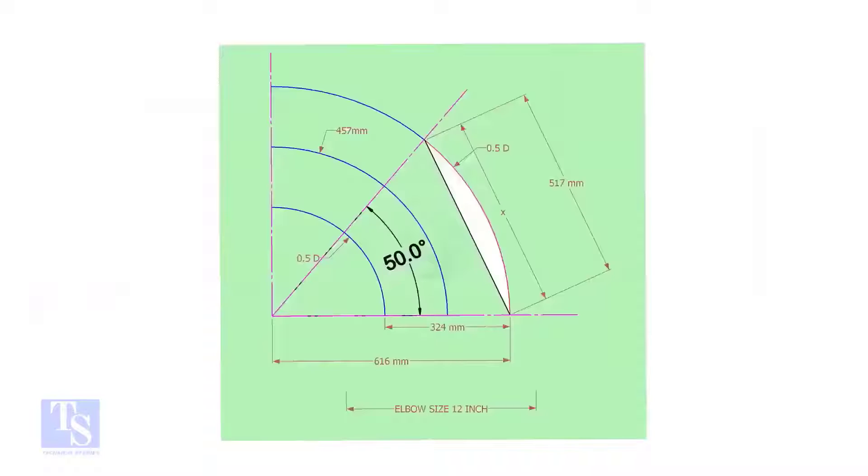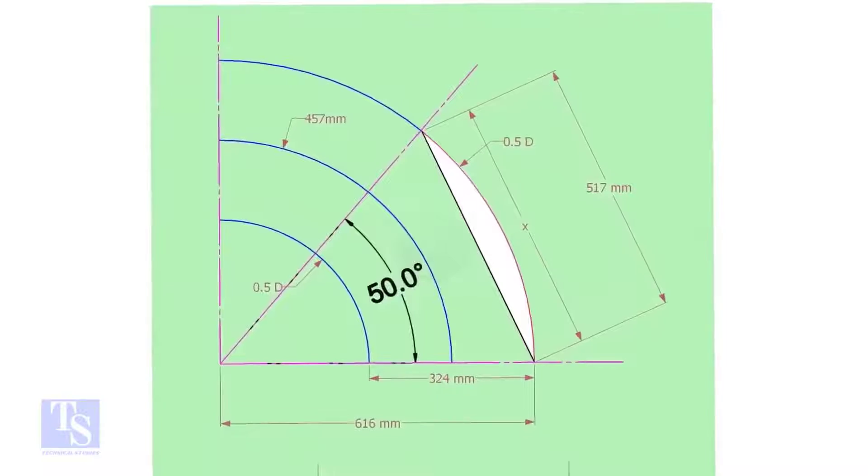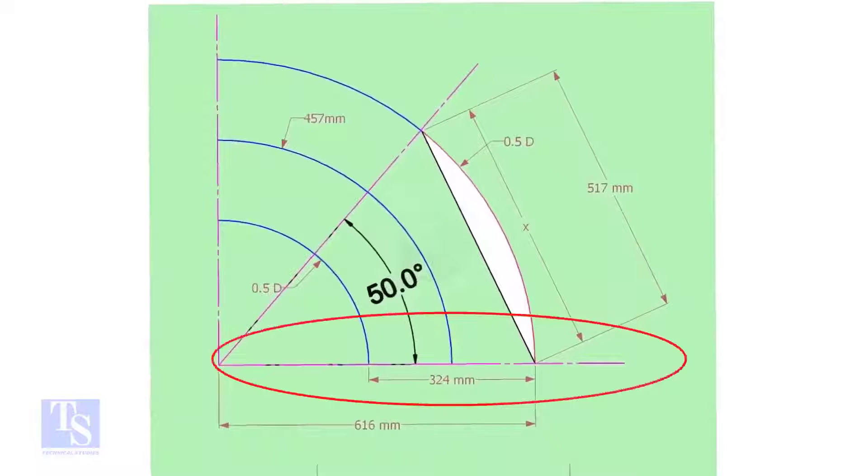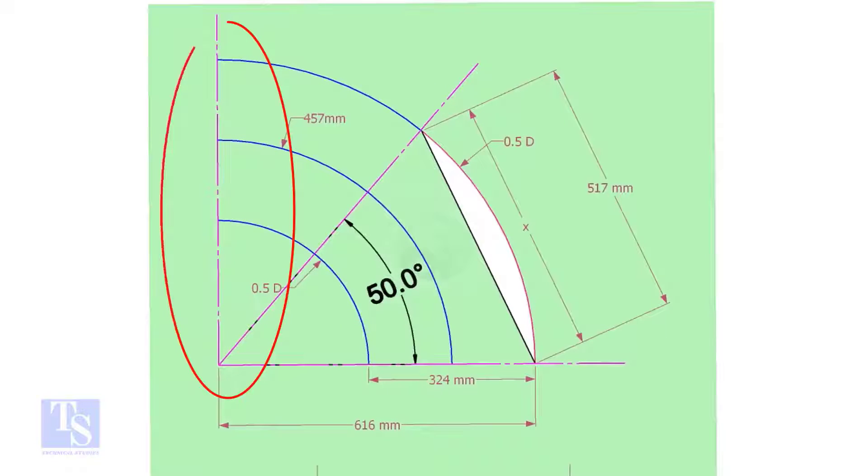Let us draw a simple layout of the elbow. Draw a horizontal line and another line perpendicular to this line.